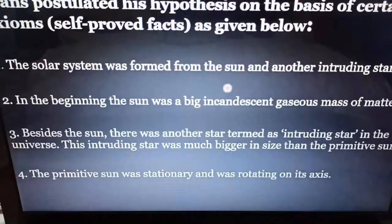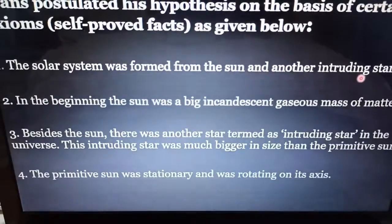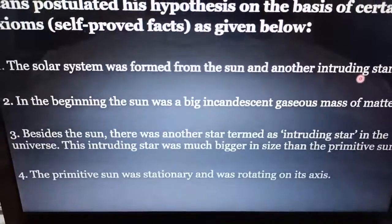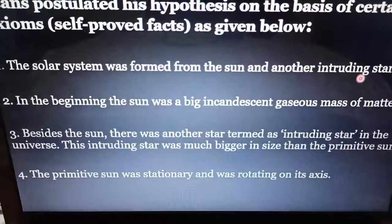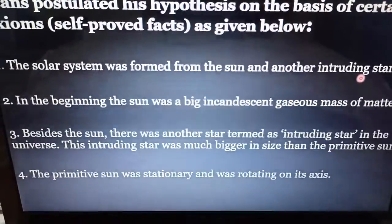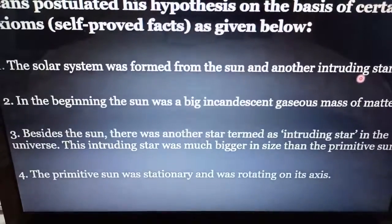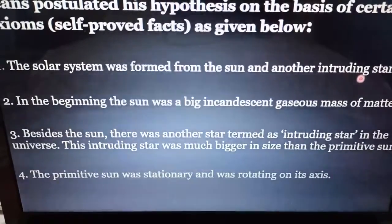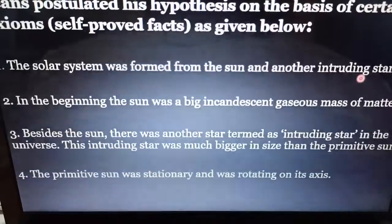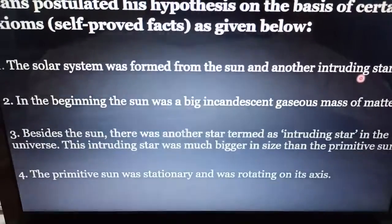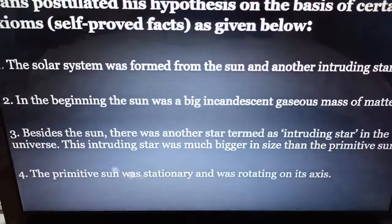Axiom one: the solar system was formed from the sun and another intruding star. The intruding star is also known as the companion star, which was much larger in shape and size than our sun, and was much stronger than our sun too.